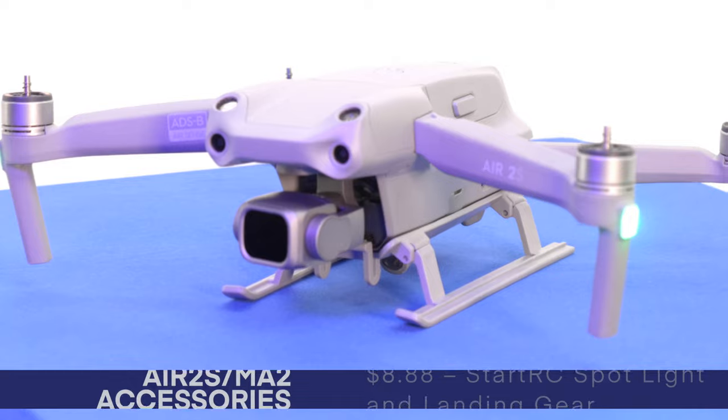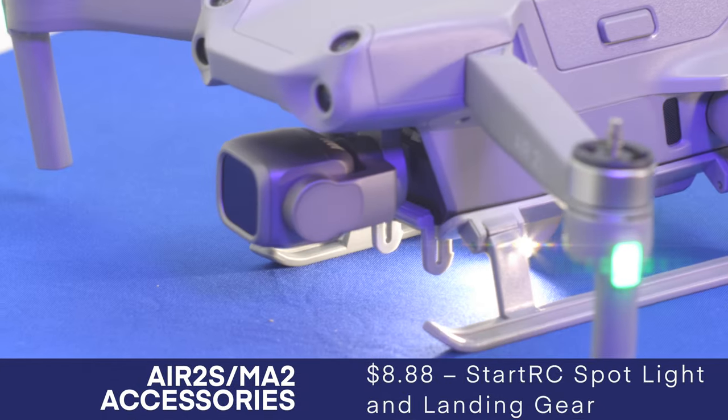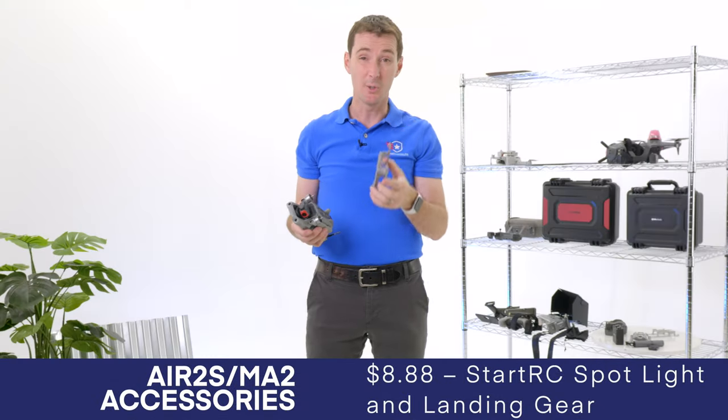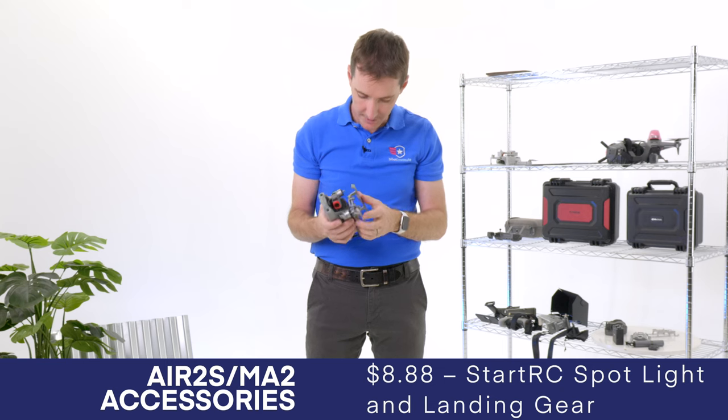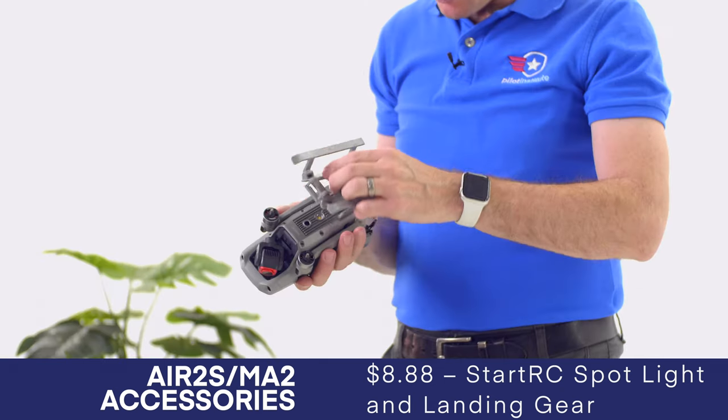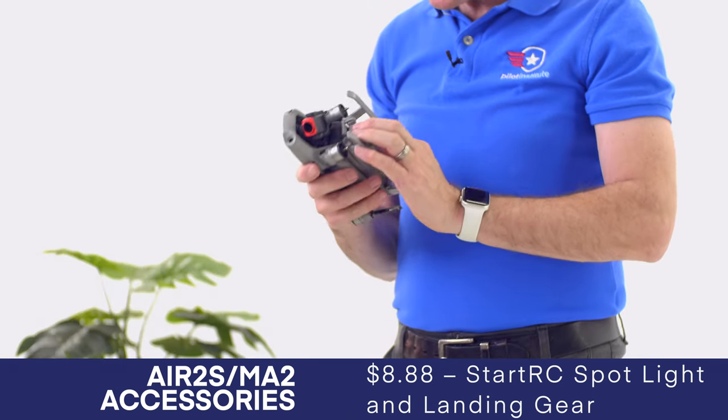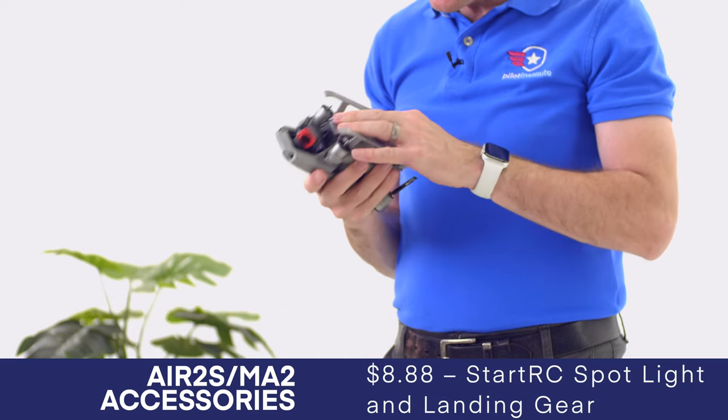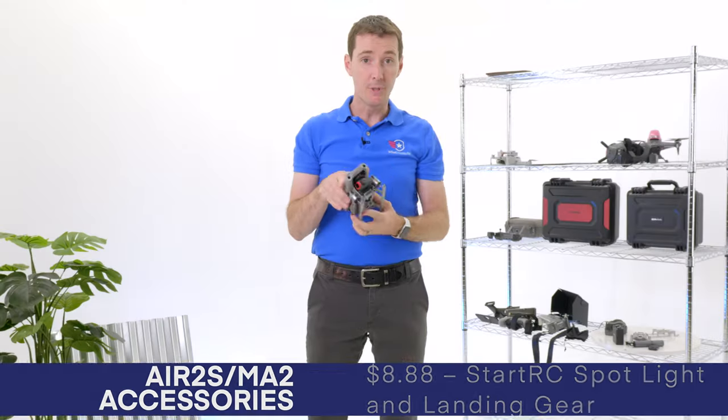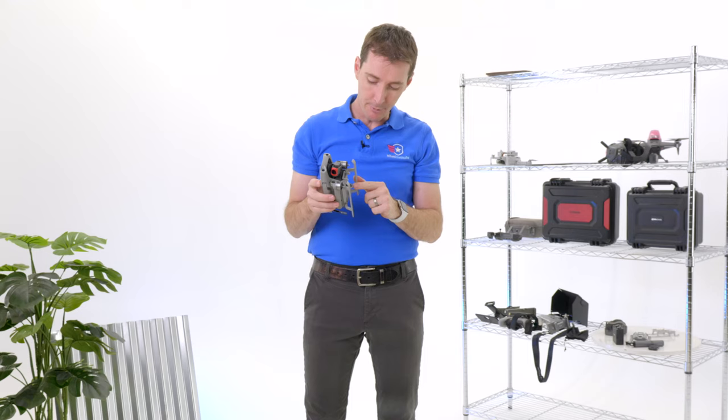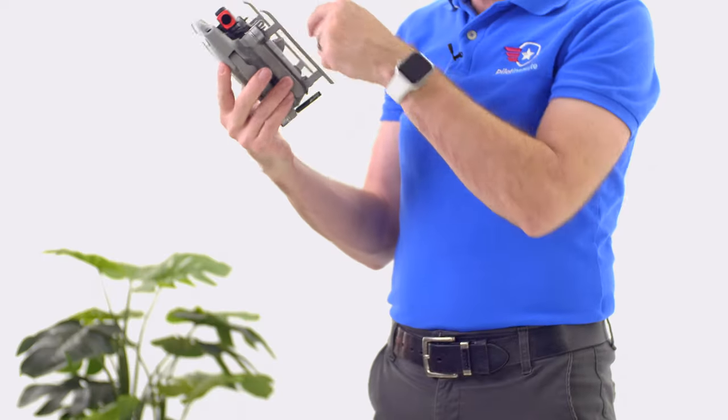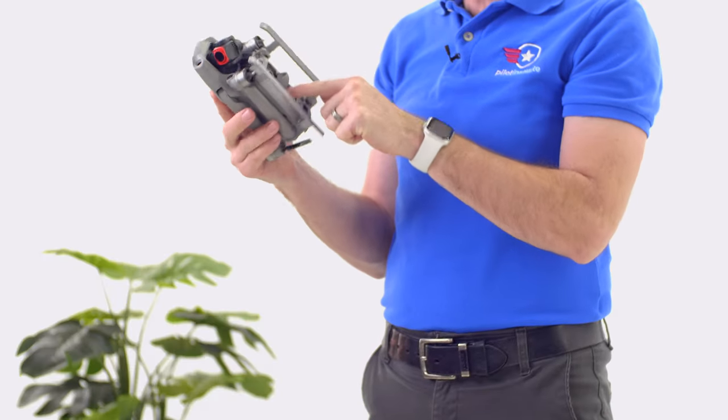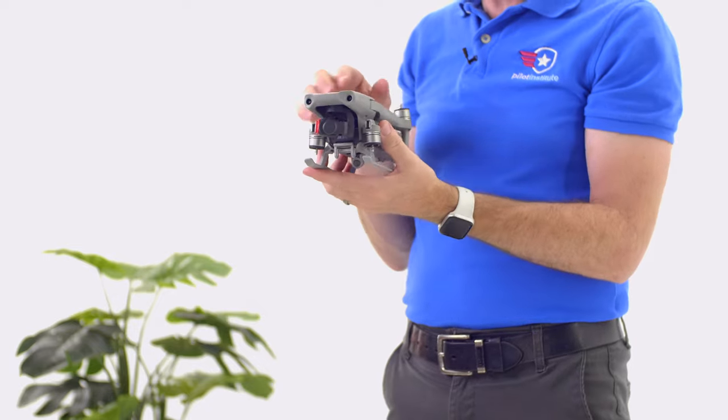The next thing I want to talk about is some landing gear for this drone. The first one is this one right here, which is essentially designed to be a landing gear. It's a two-in-one, a landing gear with a spotlight. We're going to clip this at the bottom. You start from the back like this, and then you clip it in the front just right here.